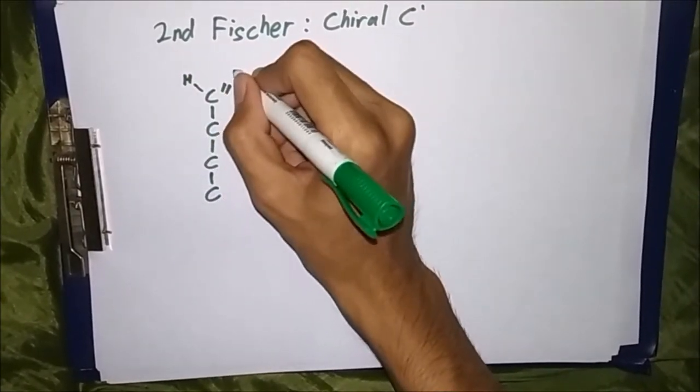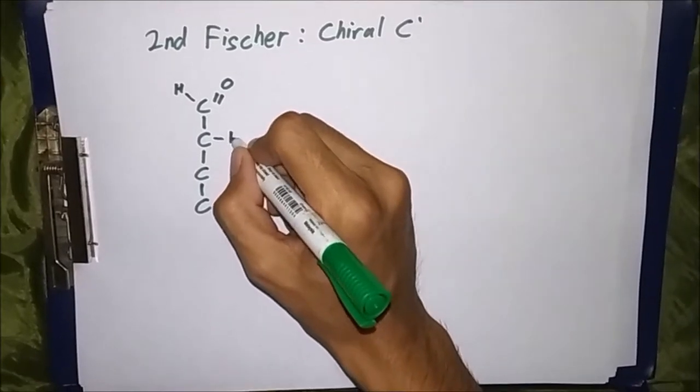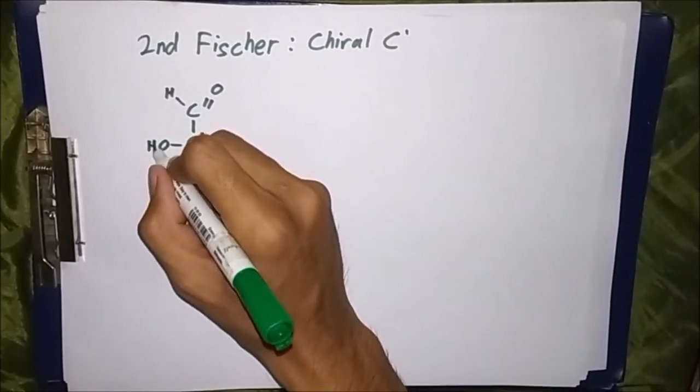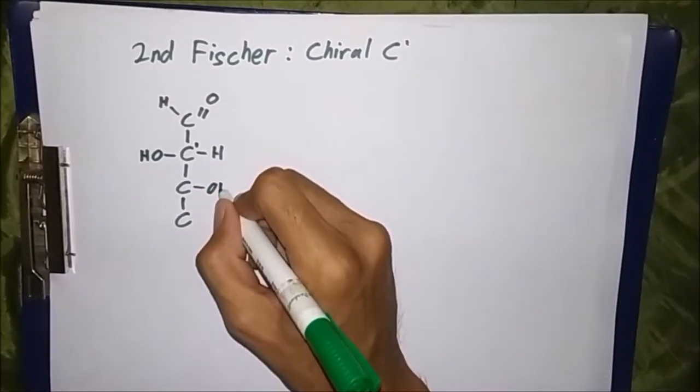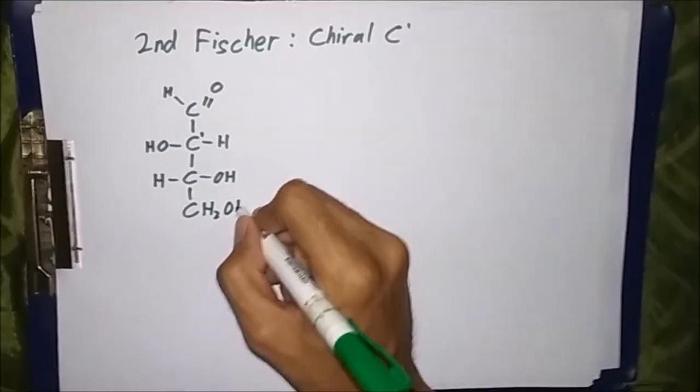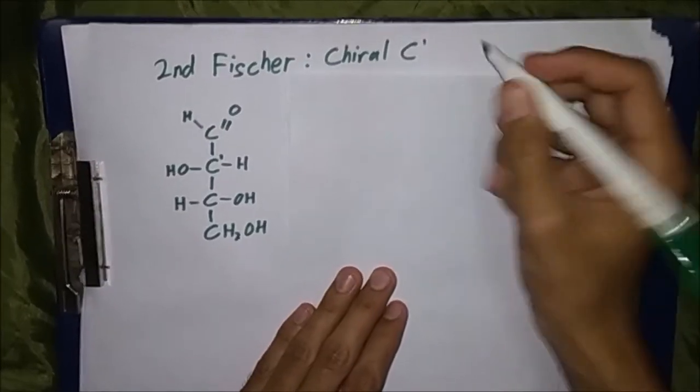Fischer projections were originally proposed for the depiction of carbohydrates and used by chemists, particularly in organic chemistry and biochemistry. The use of Fischer projections in non-carbohydrates is discouraged, as drawings tend to be ambiguous and often confused with other types of drawings.